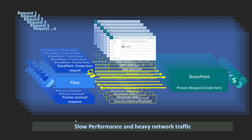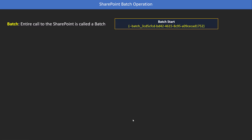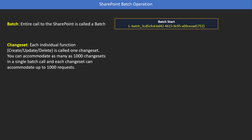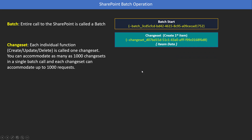That's where SharePoint Batch is useful. Batch allows you to send multiple requests — whether to create items, delete items, or any SharePoint operation — in one single batch request. The next concept to understand is the 'changeset.' A changeset is simply a grouping of different requests you are sending to SharePoint. You can have up to 1000 changesets under a single batch request, and under each changeset you can have up to 1000 requests.